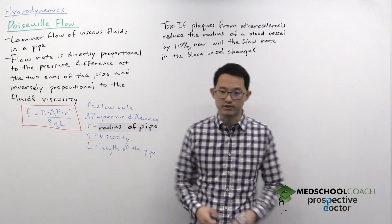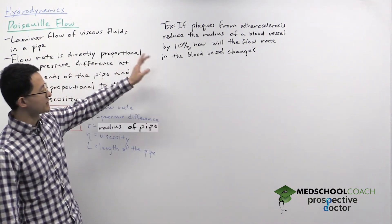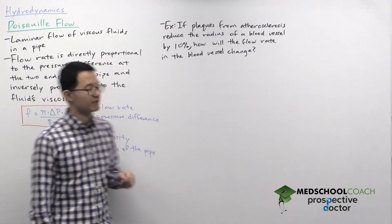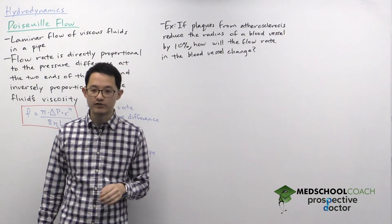To see how this works, let's take a look at an example. The situation is if plaques from atherosclerosis reduce the radius of a blood vessel by 10%, how will the flow rate in the blood vessel change?